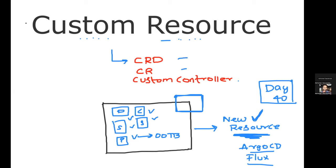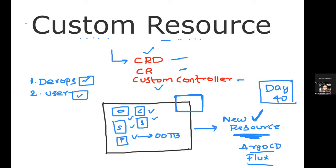There are two actors here: actor number one is the DevOps engineer, and actor number two is the user. Deploying the custom resource definition and the custom controller is the responsibility of the DevOps engineer. Deploying the custom resource can be the action of the user or the DevOps engineer as well. Whenever you want to introduce a new resource to Kubernetes — Argo CD, Flux, Keycloak — you need a custom resource, custom resource definition, and a custom controller.